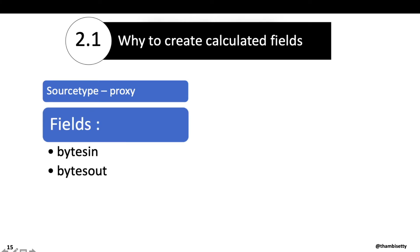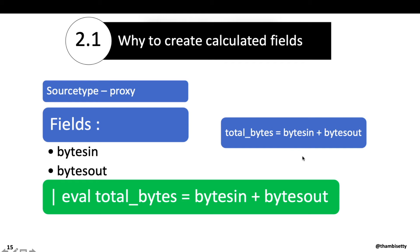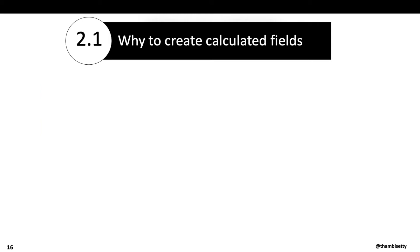Let's understand why to create calculated fields. For example, you might have a field like total_bytes = bytes_in + bytes_out. If you are using proxy logs daily and creating multiple reports, having to write this eval statement every time would be difficult. That's why in Splunk we create calculated fields, so that total_bytes appears automatically in the fields section without rewriting the expression.